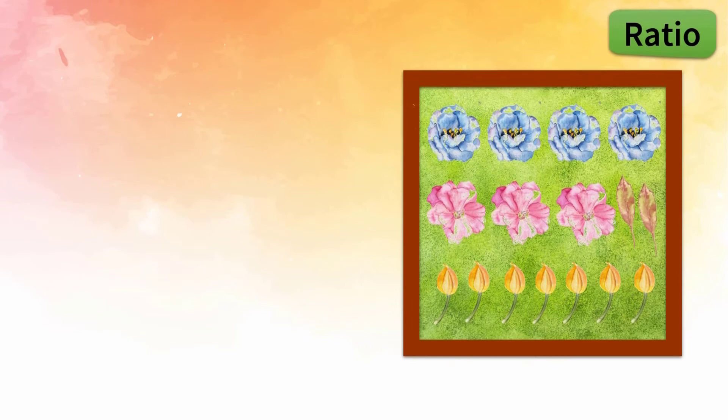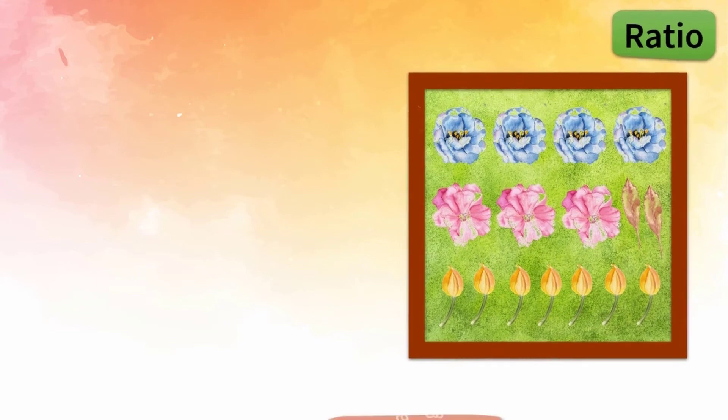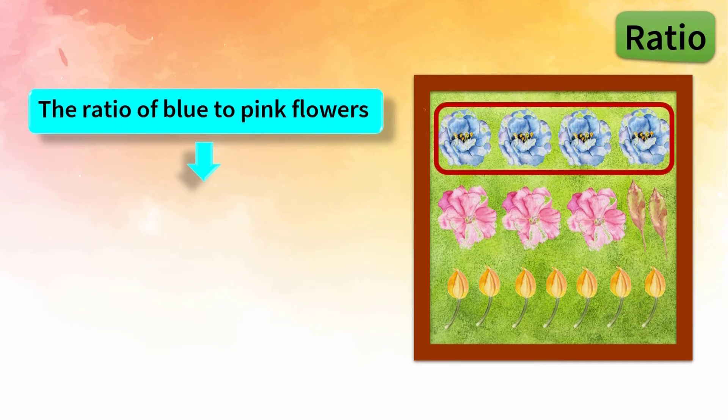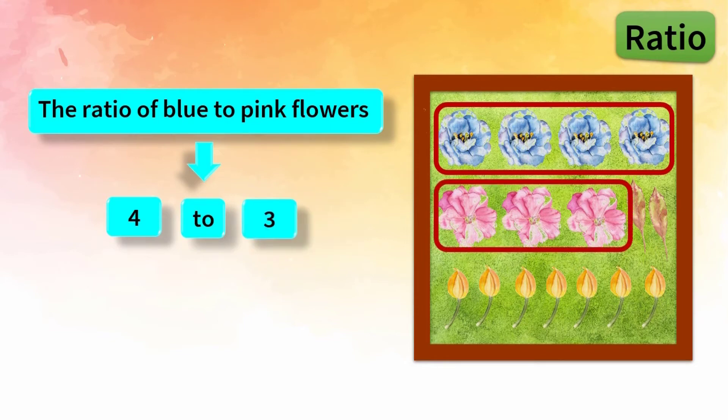It would be interesting to compare the number of different types of plants and see which type is more and which type is less. As an example, I'd like to compare blue flowers with pink flowers. So the ratio of blue to pink flowers is what we are looking for. As you can see, we have 4 blue flowers and 3 pink flowers. Thus blue and pink flowers have a 4 to 3 ratio.